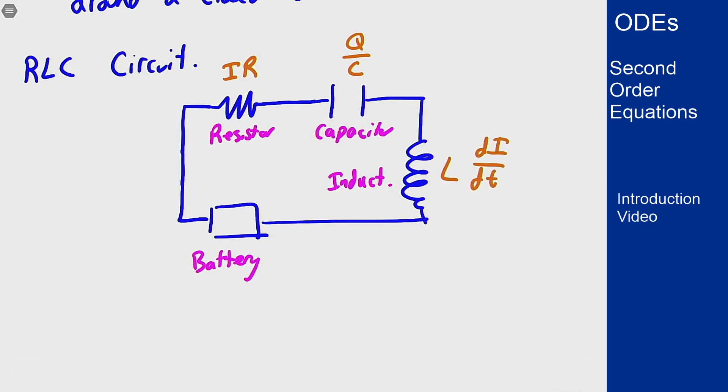And for the battery it's some fixed constant V, which is the battery voltage. Now the key point here is current is the change in charge, which means that i is equal to dq/dt, and then so di/dt is a second derivative.